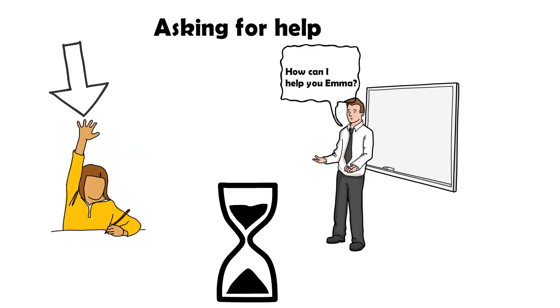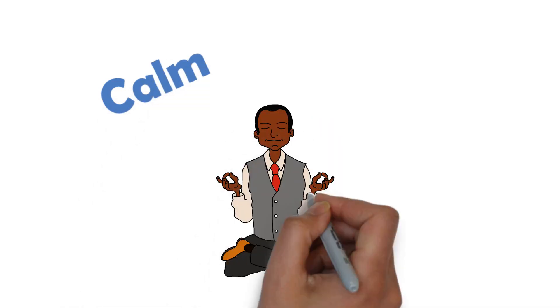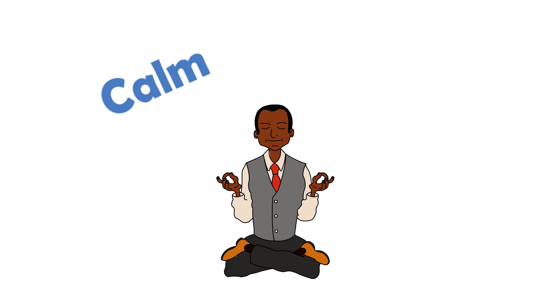When an adult does finally get to you, you should try your best to be calm while talking to them. I know that it can be difficult at times, especially when someone's hurting you or your feelings, but staying calm makes it much easier for adults to understand what's wrong and how they can help you.